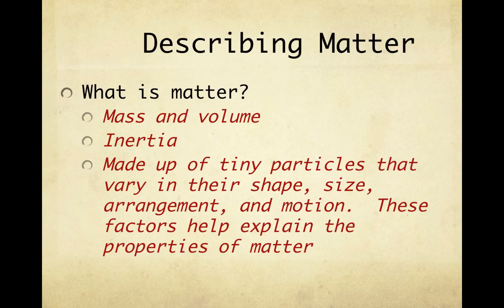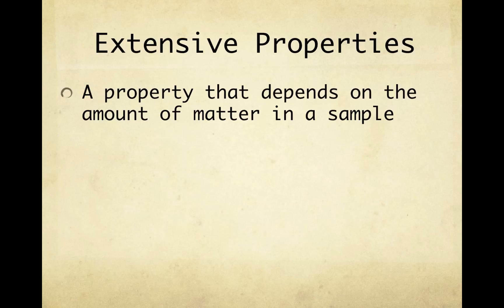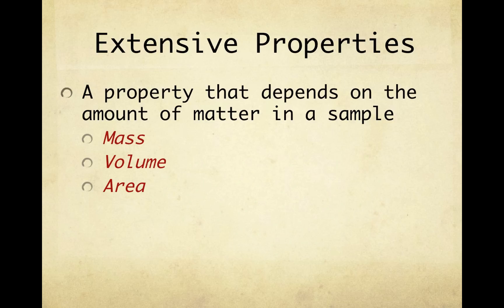Let's now consider some properties of matter. The first type of property is called extensive properties. Extensive properties are properties that depend on the amount of matter in a sample. Some examples of extensive properties are mass, volume, area, and length. Anything that has to do with the size of the sample of matter is related to extensive properties.